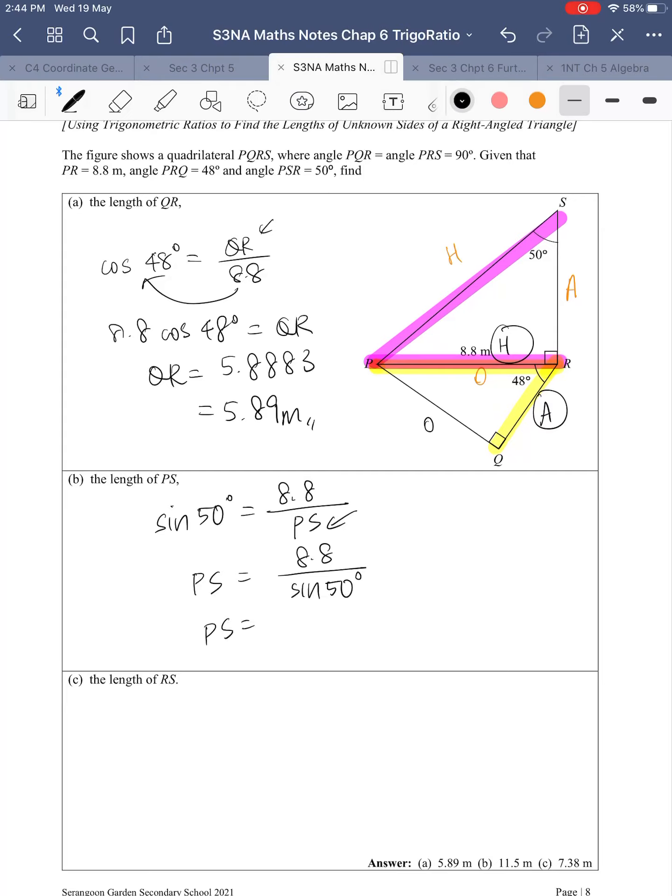So some of you might be thinking of doing inverse. Remember, you only do inverse when you're finding angles. I have 11.5 meters, rounded to 3 significant figures.